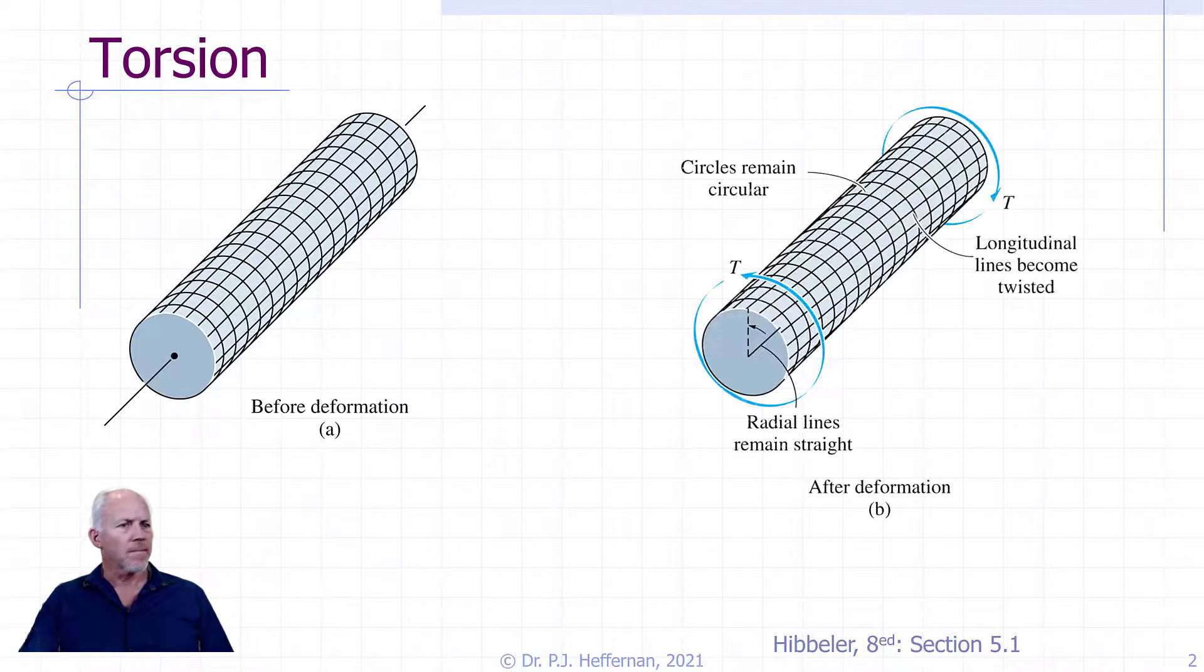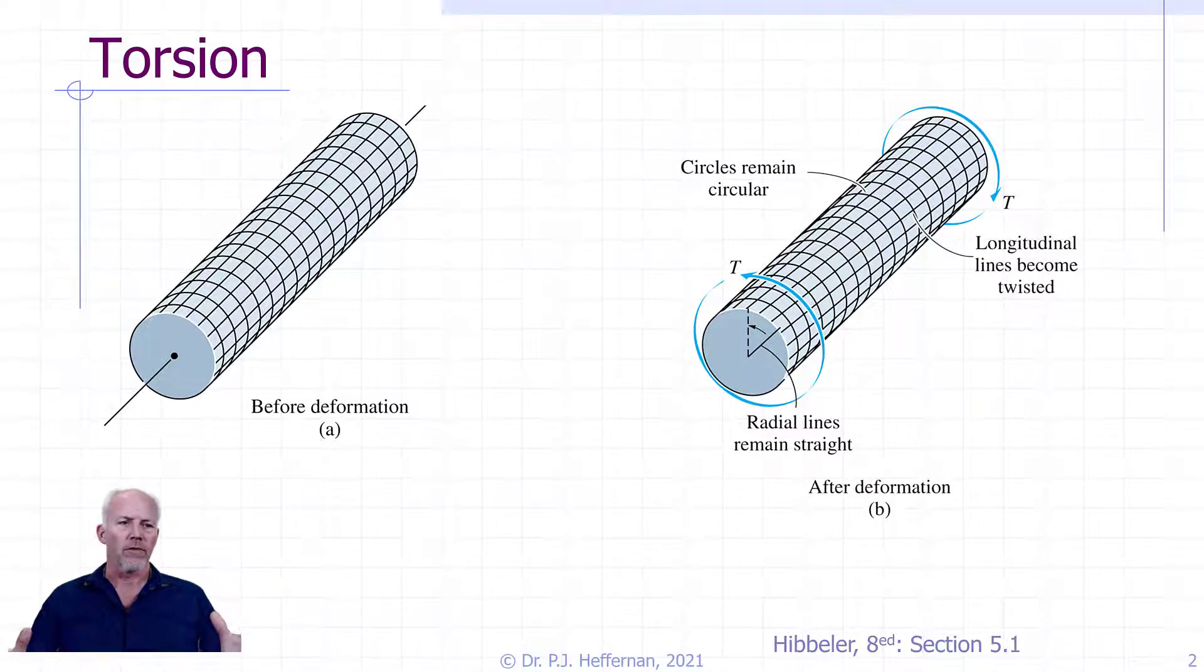When the torque is applied, a constant torque over the shown section of the rod, the rod deforms as we can see here in the second diagram.